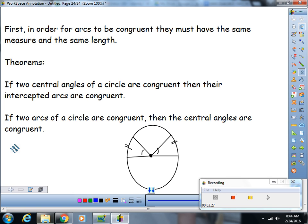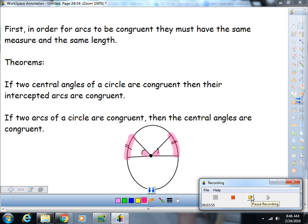If two central angles of a circle are congruent, then their intercepted arcs are congruent. The converse of that is also true. If two arcs of a circle are congruent, then their central angles are congruent. So in this example here, if you know that that's true, then you know that those are congruent. Does that make sense? All right. Hopefully you've paused the video and copied those down.